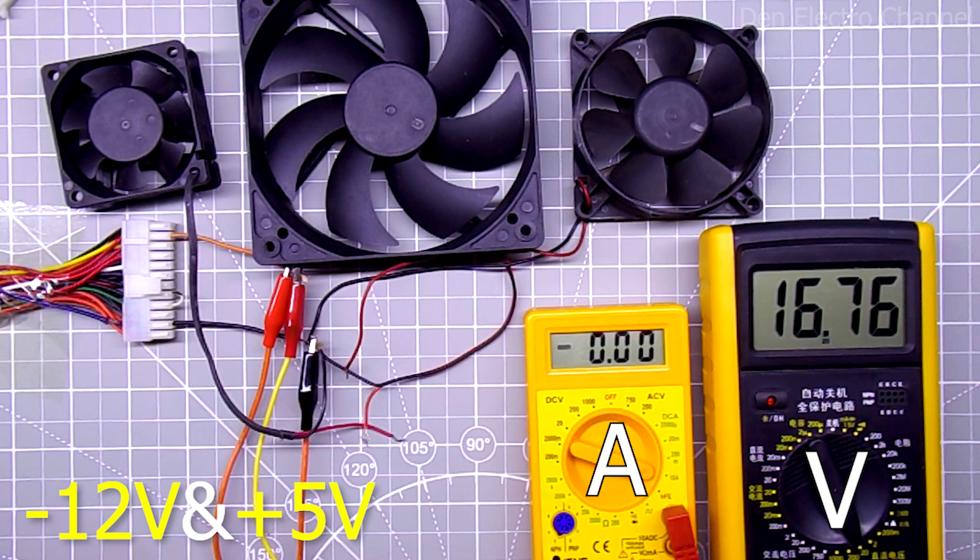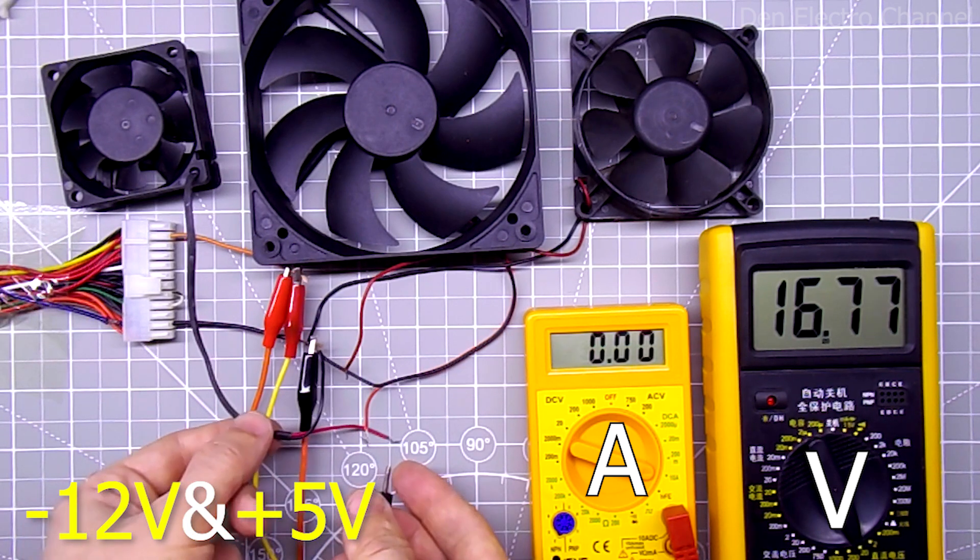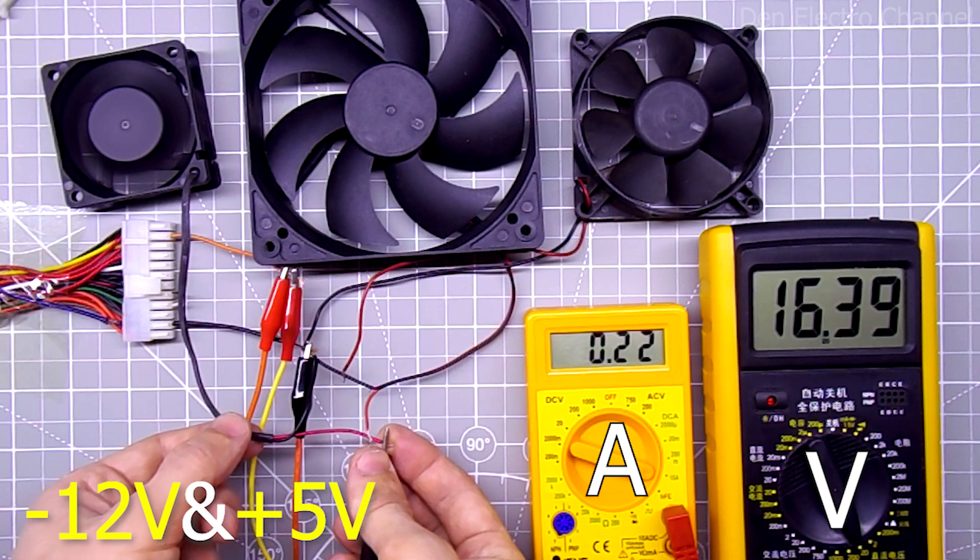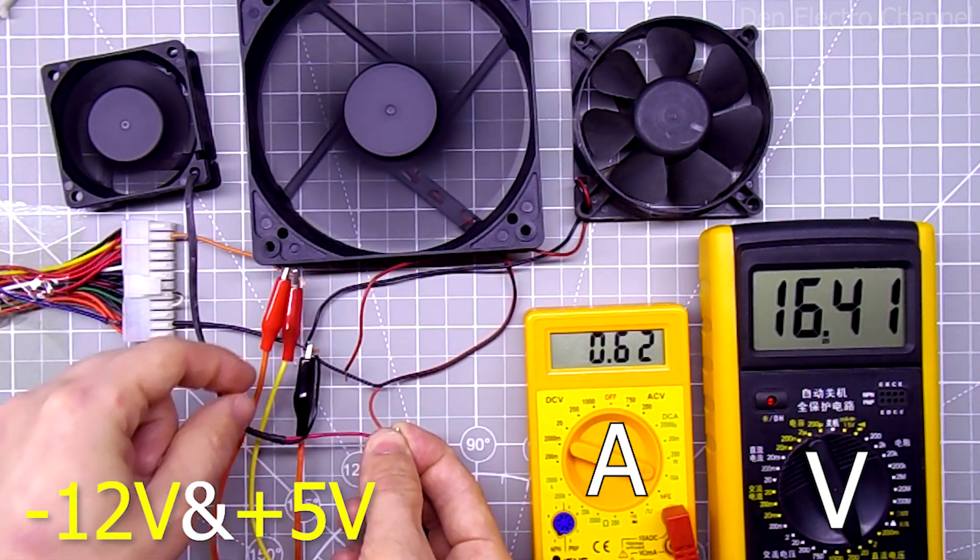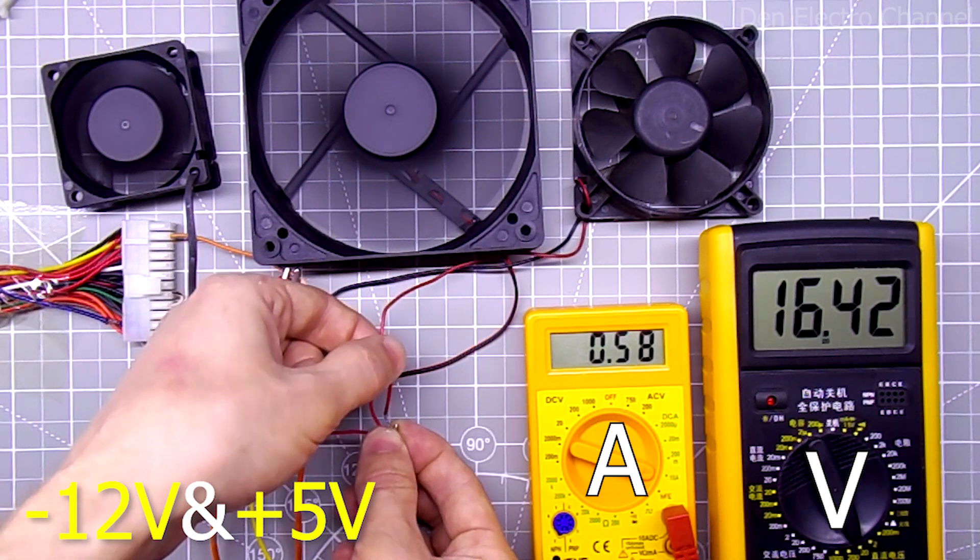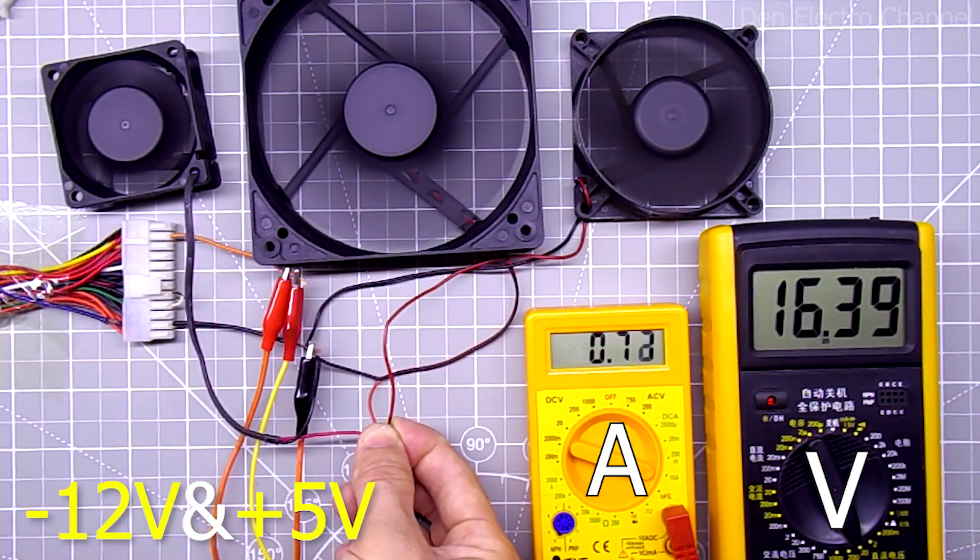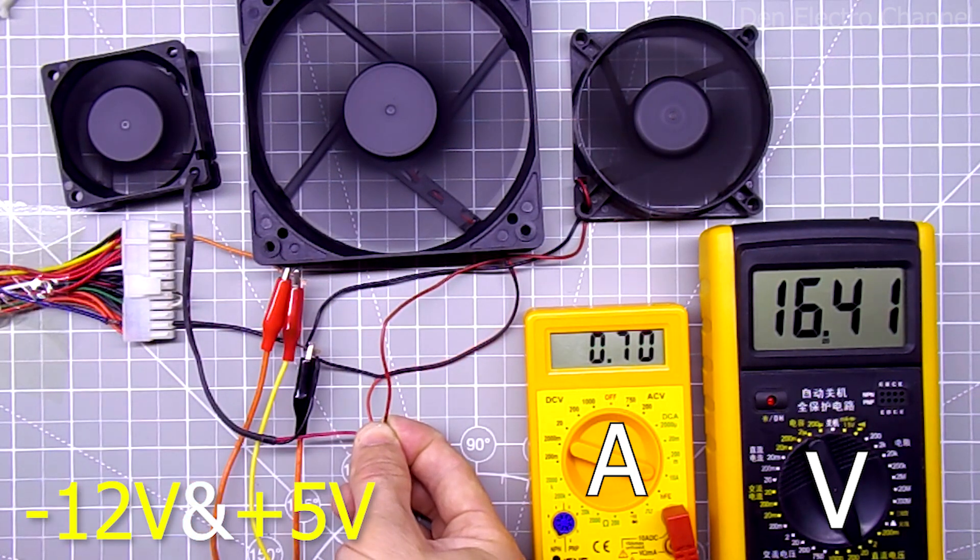Now let's see what happens between the voltages plus 5 volts and minus 12. Here it is 16.8 volts. I connect all the fans one by one. The voltage dropped by about 0.3 volts. The current is almost 700 milliamps. The load is about 10 watts, a good result.